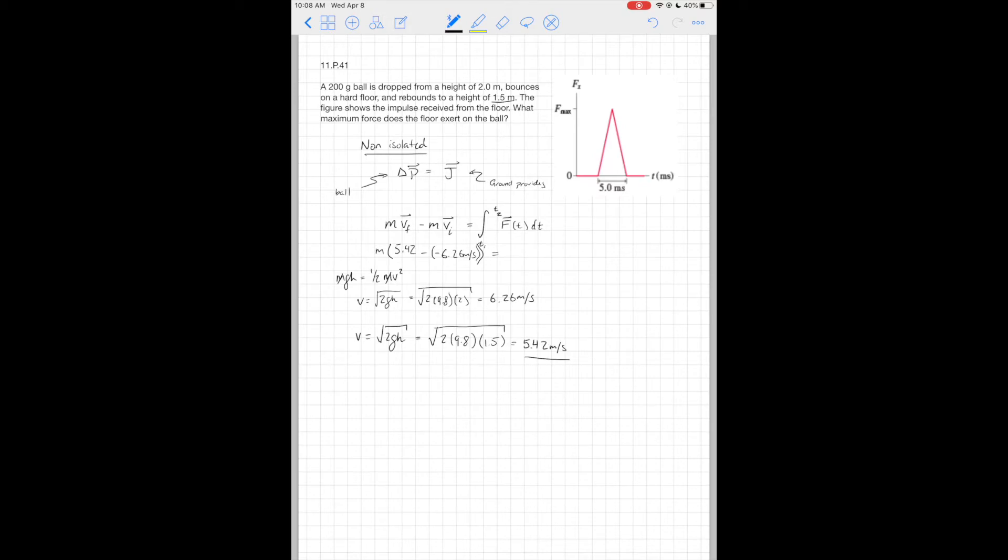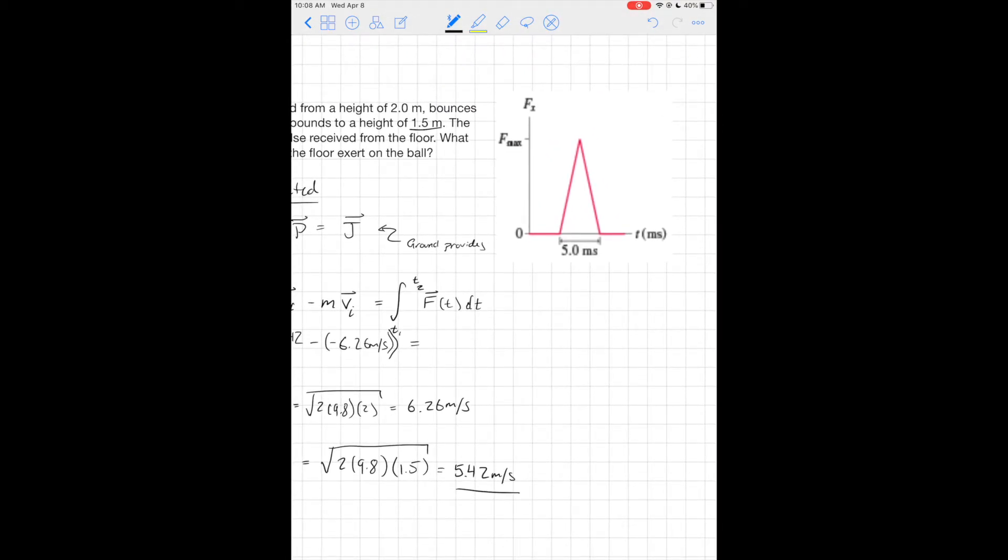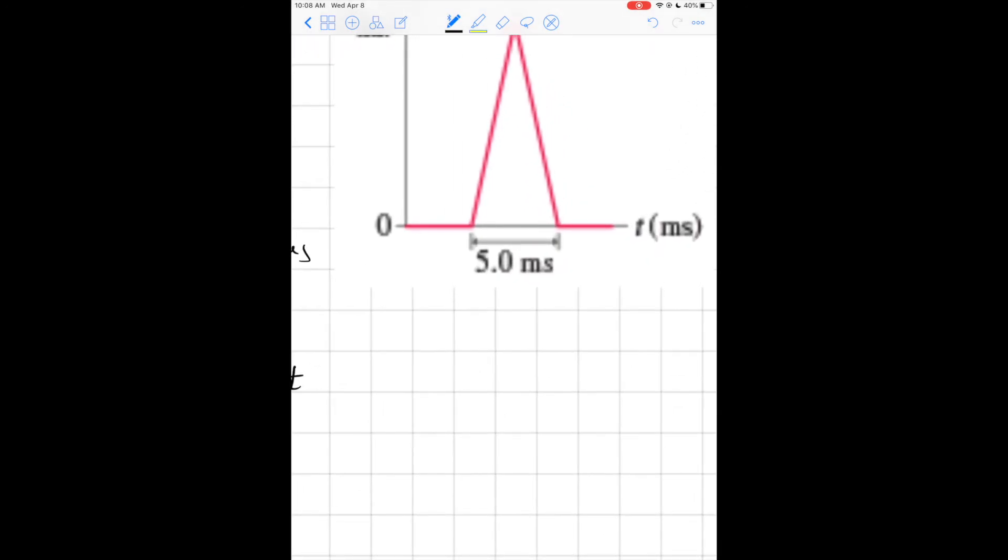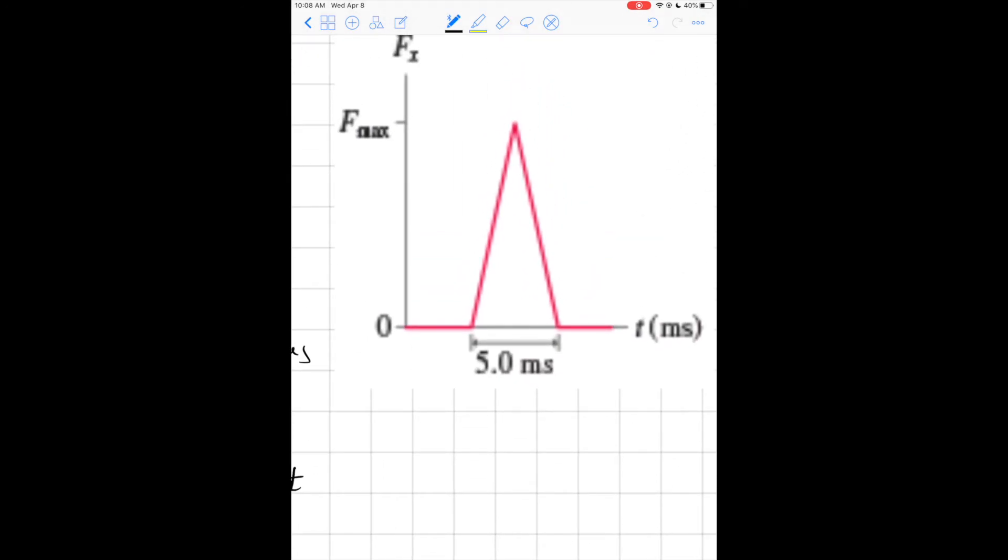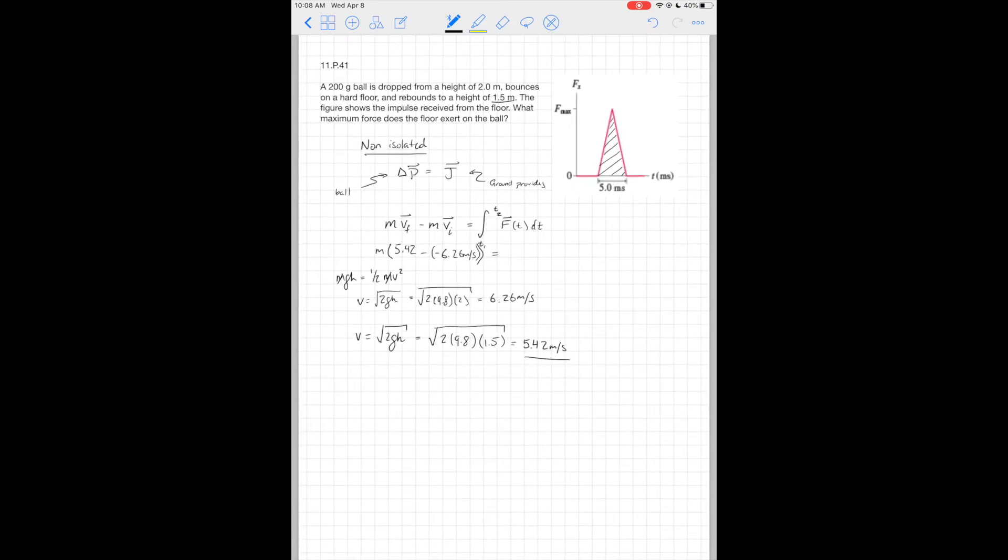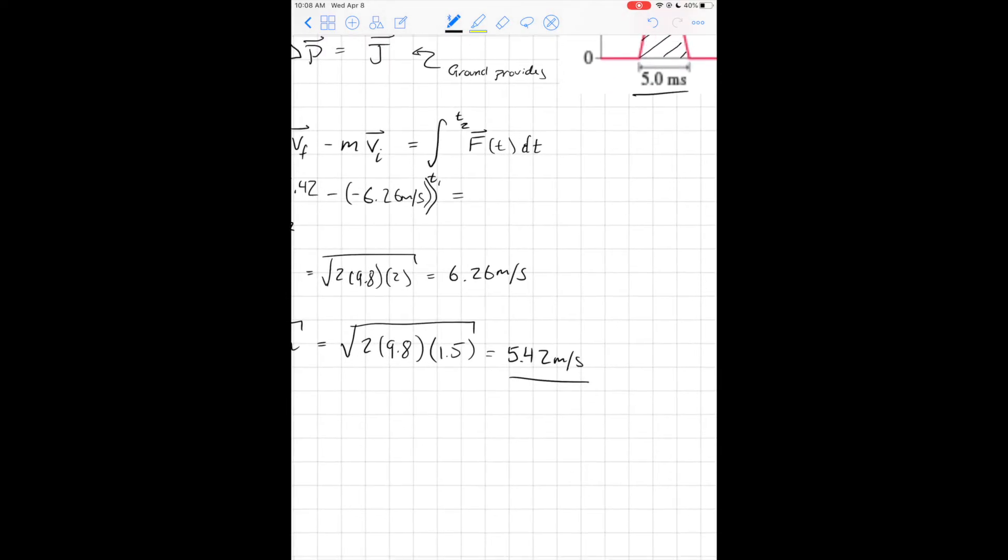So let's plug this in: 5.42 meters per second, and this is equal to this integral. Now we have a very definite shape here. I can calculate this by looking at the area underneath my curve, and I know that it's five milliseconds. We're talking really short amounts of time here.